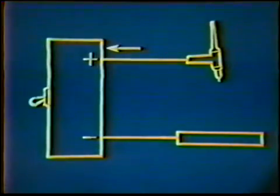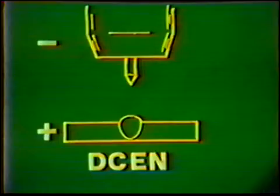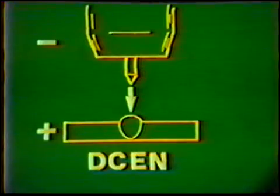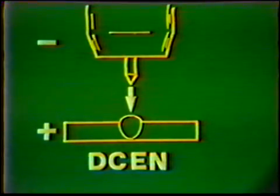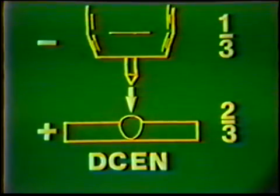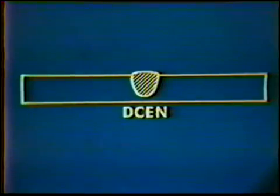It is important to remember that electrons always flow from the negative terminal to the positive terminal. In the welding circuit using electrode negative, the current travels from the tungsten to the workpiece into the work lead. This puts about two-thirds of the heat on the workpiece and one-third on the electrode. The resulting weld has deep, narrow penetration.